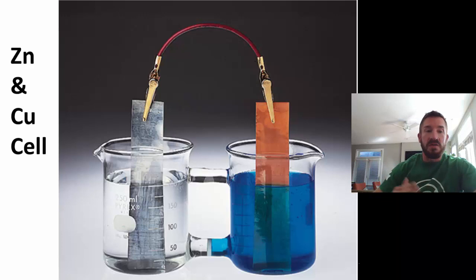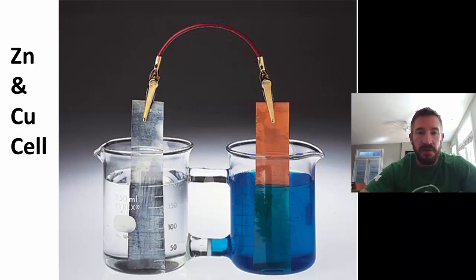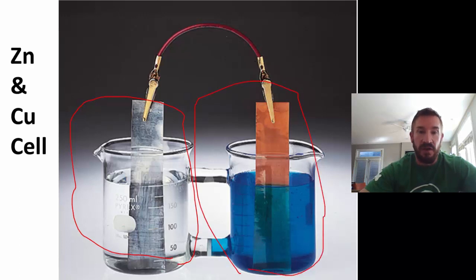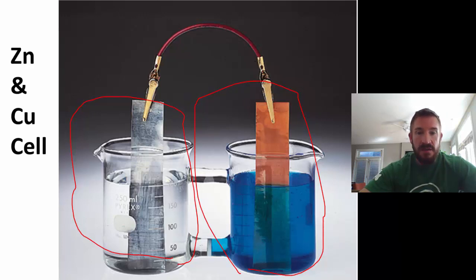Let's start with a simple zinc-copper cell. We've talked about this before. Hopefully, you recognize on one side we have a zinc solution, and that's a piece of zinc. On the other side we have a copper solution and a piece of copper. They're connected by a wire. And then also in between them, instead of a salt bridge, we have a porous disk.